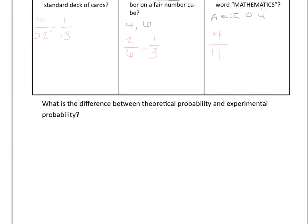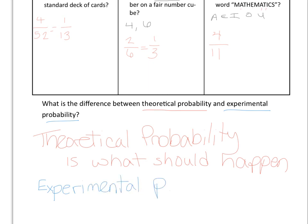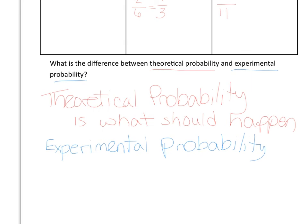The last question asks: what is the difference between theoretical probability and experimental probability? Theoretical probability is what should happen. Experimental probability is what did happen, or what actually happened.